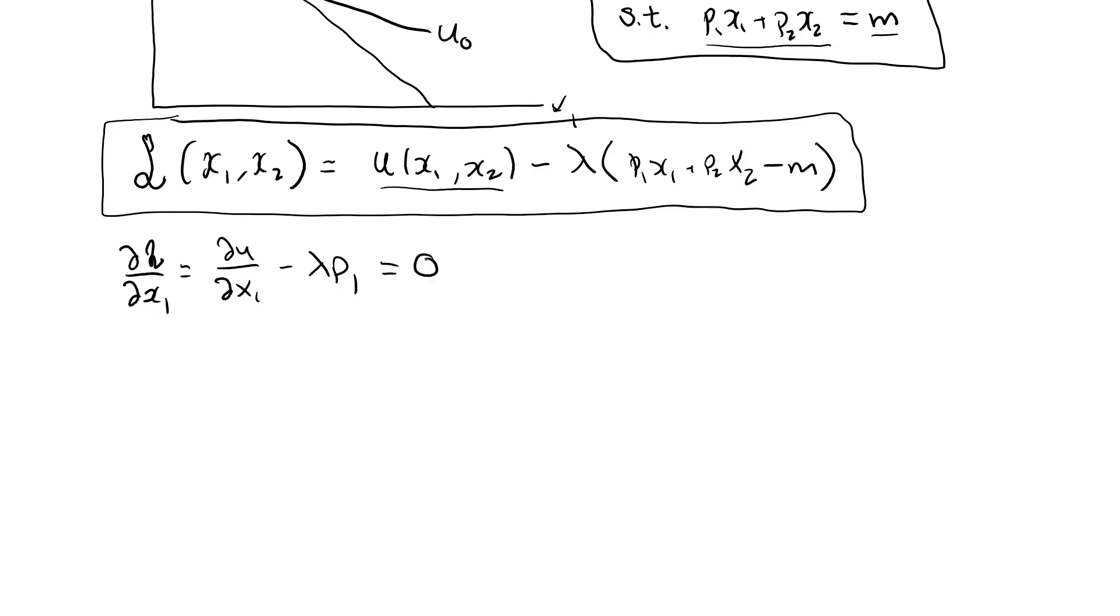This derivative needs to be zero. We have partial L with respect to x2, and that is a similar type of argument, partial u, partial x2 minus. We have an x2 here, so we have a minus lambda p2 x2, and the derivative is lambda p2. That should be zero.